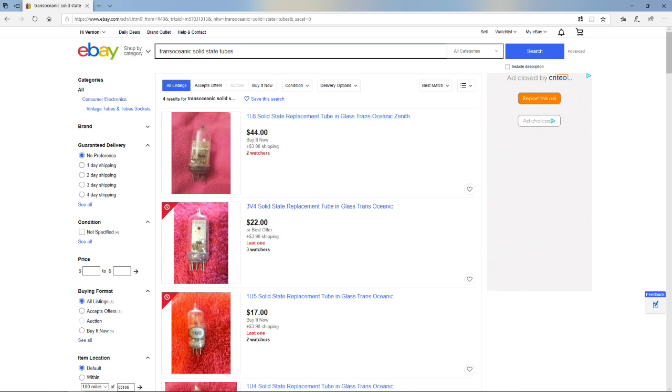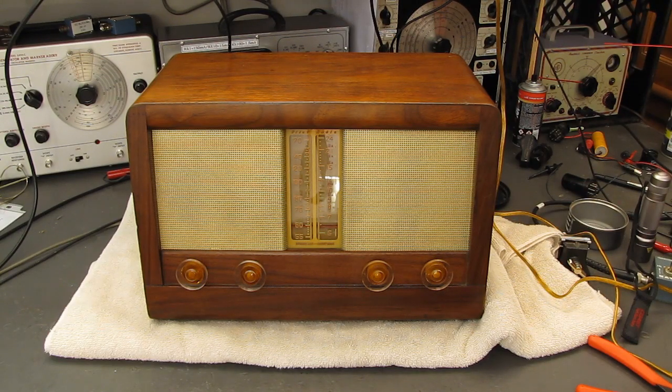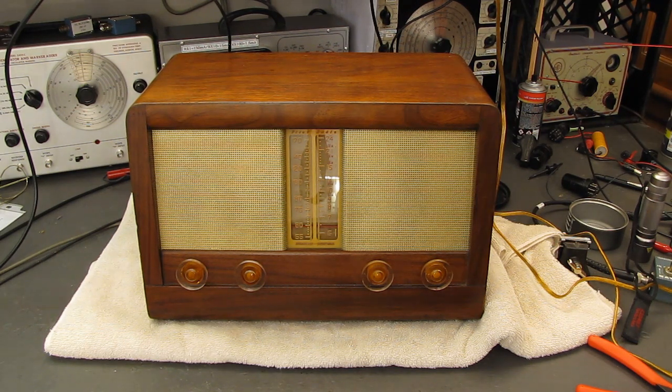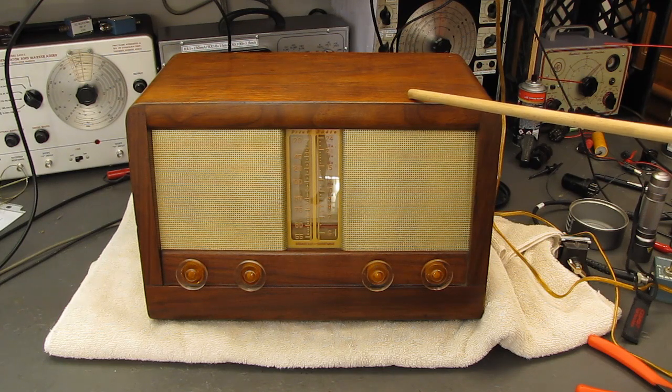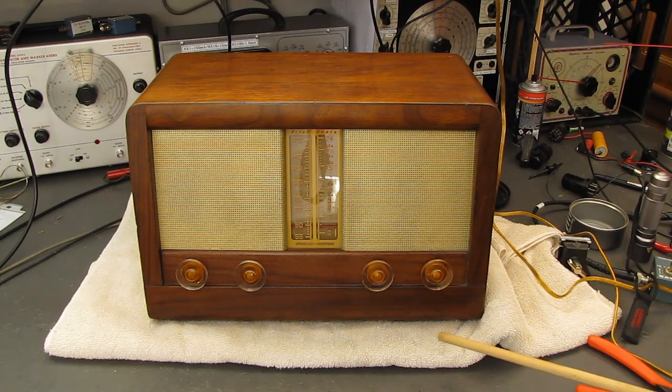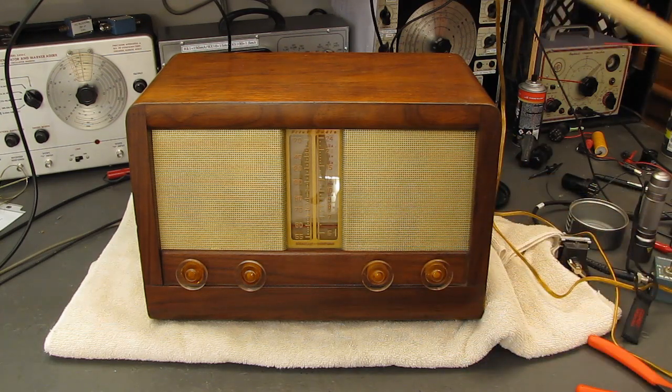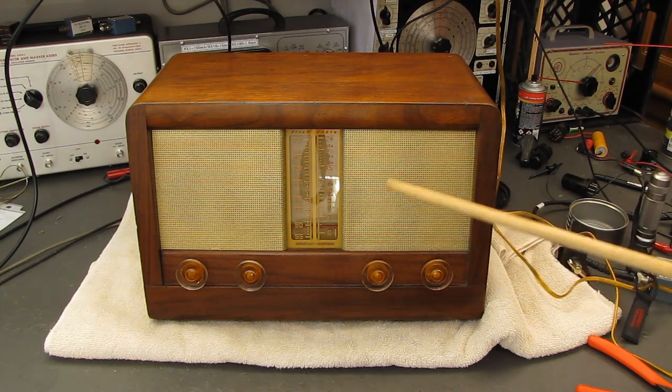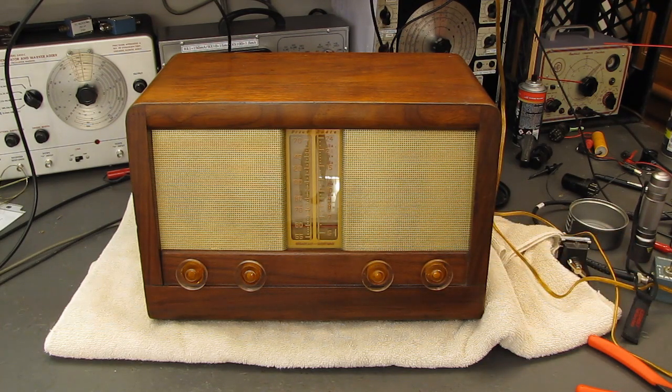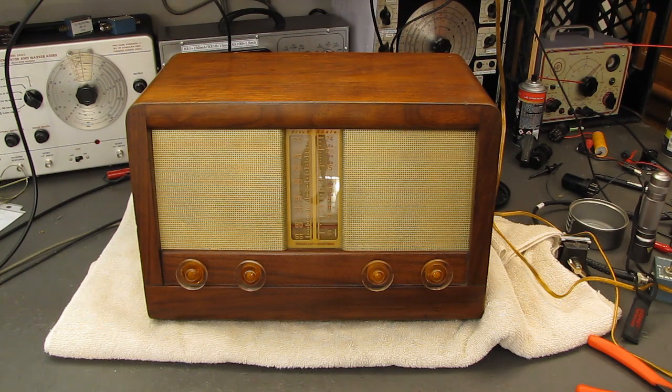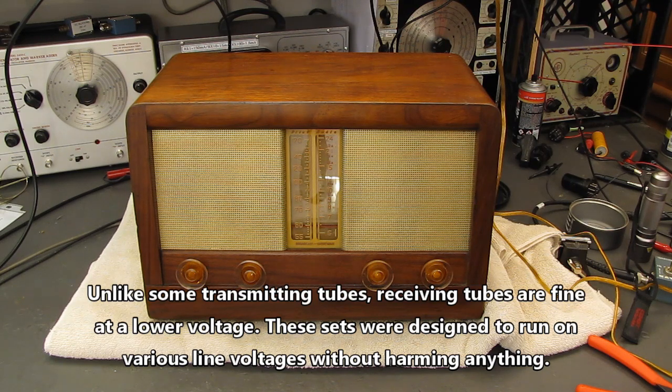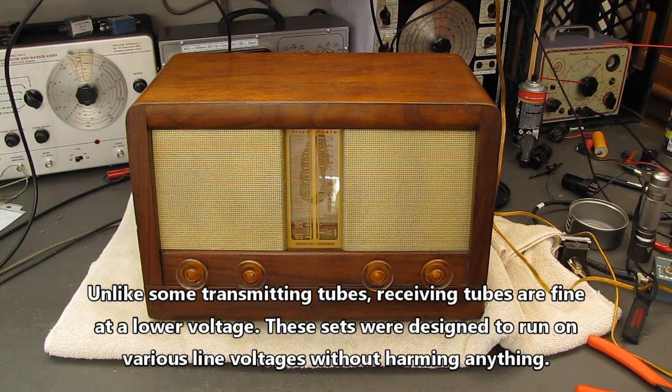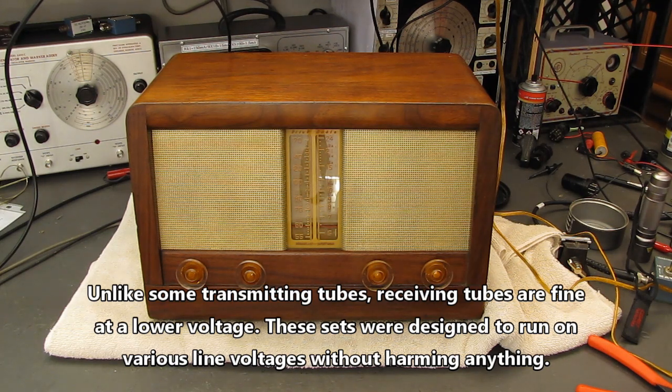You can buy a little seven pin miniature glass envelopes, look just like a tube, but they're full of solid state electronics for the Transoceanic. What I do to try to preserve them, this set has a very good set of tubes in it. The emission on them, they're like brand new tubes. To preserve that, I have changed the 35L6 output tube to a 50L6, dropping the string voltage or increasing its capacity to handle voltage by 15 volts. In other words, everything's running a little bit cooler than it used to. My thought is it'll help preserve the cathodes of the tubes and extend their life.